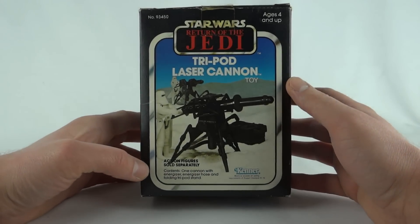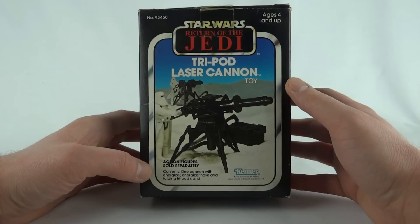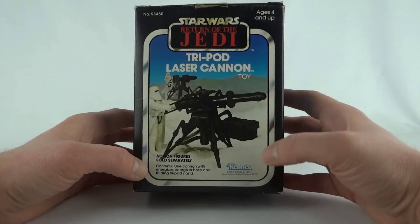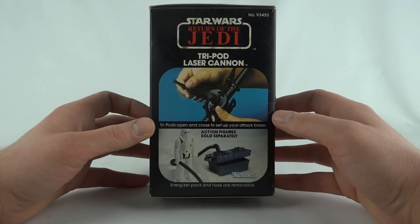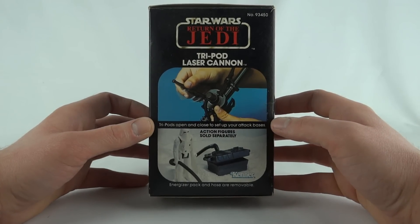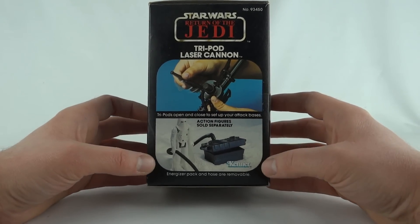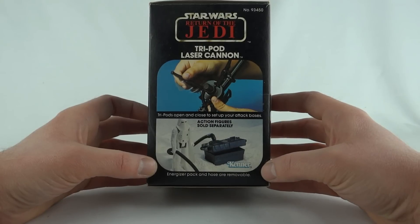You can see the action figures sold separately. Contents: one cannon with energizer, energizer hose, and a folding tripod stand made by Kenner. On this side we've got tripods open and closed to set up your attack bases. Energizer pack and hose are removable.